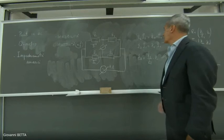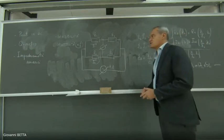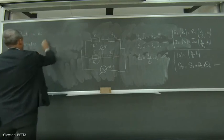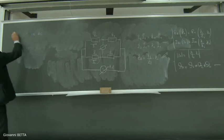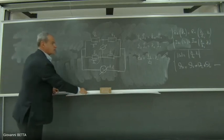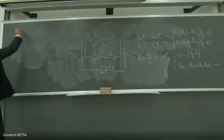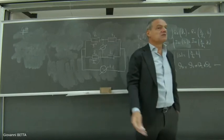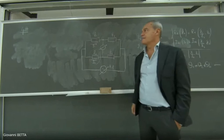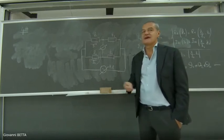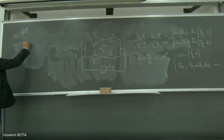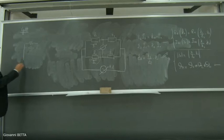Vedremo tra oggi e domani un certo numero di ponti in alternata, in maniera tale da poter dare qualche ulteriore indicazione sui problemi connessi a questo tipo di misura. Un primo ponte che vediamo è il ponte a confronto di capacità serie, o ponte di Gott. Quasi tutti i ponti hanno il nome di qualcuno a cui sono in qualche modo associati, anche se a volte i libri attestano circuiti diversi a persone diverse.